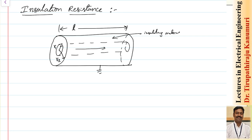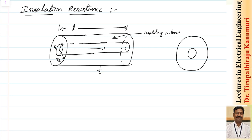Current is supposed to pass through the conductor, but practically, because the conductor is at some potential and the outer sheath is at ground potential, due to this potential difference a leakage current will pass between the conductor and the sheath. This is called the leakage current.